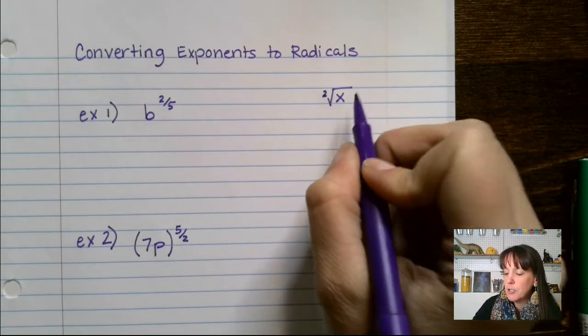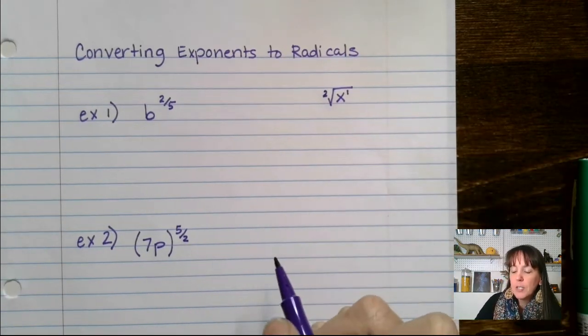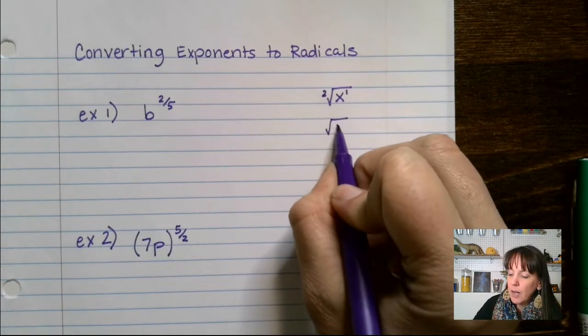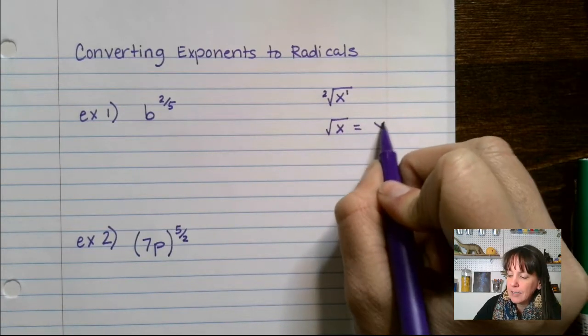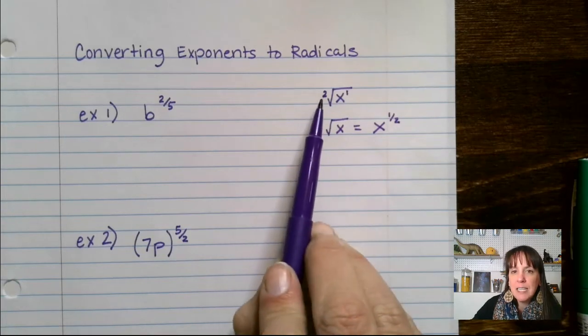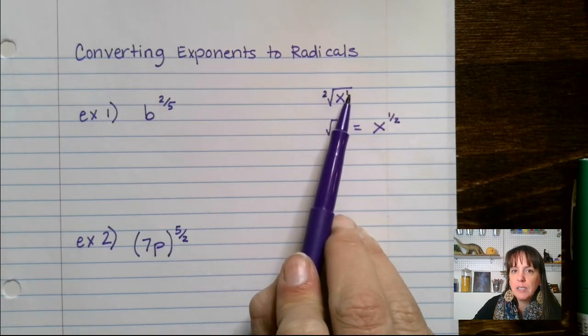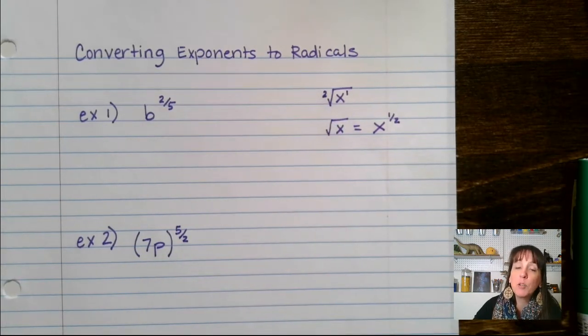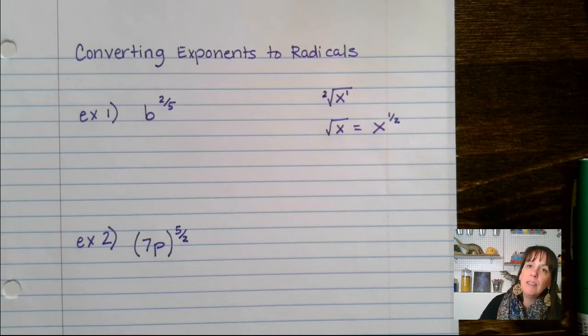Remember, if an exponent is not shown, it is a 1. So the square root of x is actually x to the 1 half power. You'll see that this 2 gets booted to the 1 over, booted underneath the 1 in that exponent.